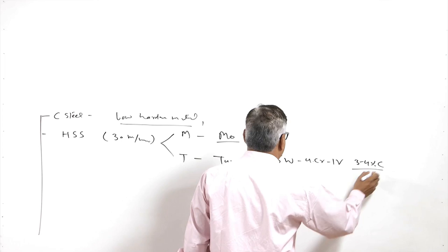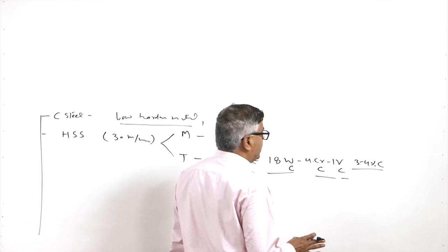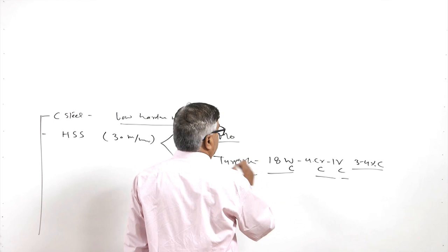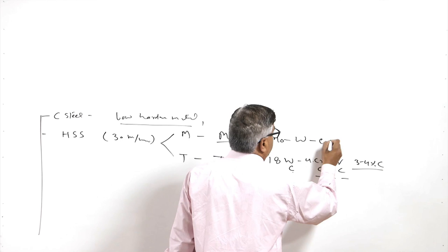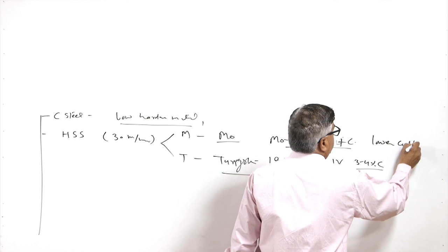There are two variants of high speed steel: the M series (molybdenum-based) and the T series (tungsten-based). The most commonly used T-series HSS contains 18% tungsten, 4% chromium, 1% vanadium, and about 3–4% carbon. These are all strong carbide formers producing tungsten carbide, chromium carbide, and vanadium carbide, which are very hard and stable at elevated temperatures — that is why they offer good hot hardness. Since tungsten is costly, molybdenum has been used to replace it in the M series at lower cost, though M series allows somewhat lower cutting speeds.